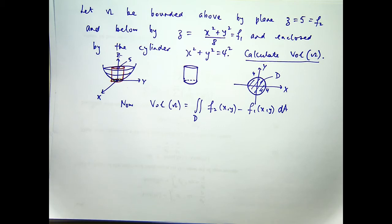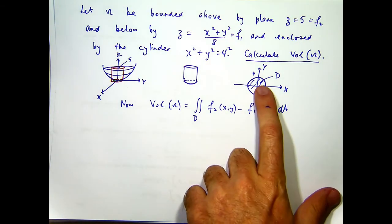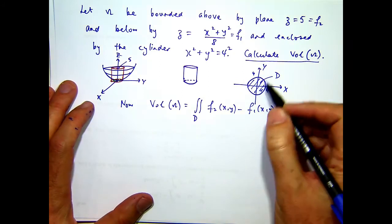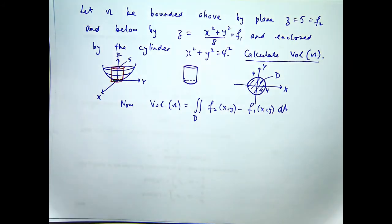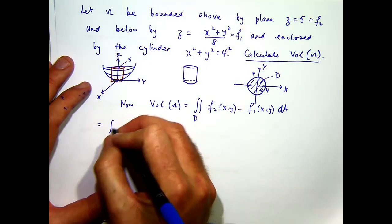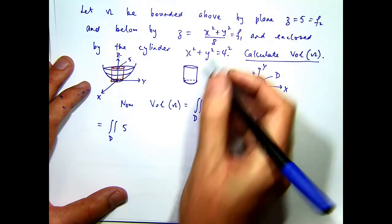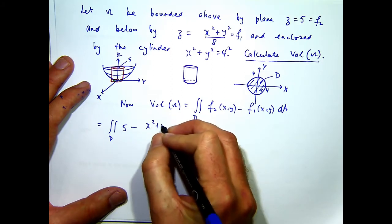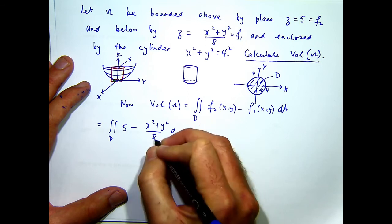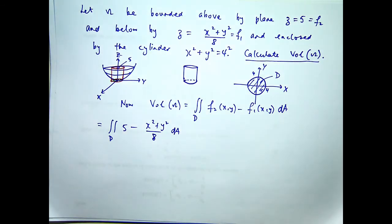This is the same principle here. You've just gone up one dimension. So the volume of omega, let's call this region D here, is the double integral over this region D of f2 of x comma y minus f1 of x comma y. So f2 is just the constant function 5. f1 is going to be this. So we've still got our integral here in a general form. What we'd like to do is put in our limits of integration and knock it over.